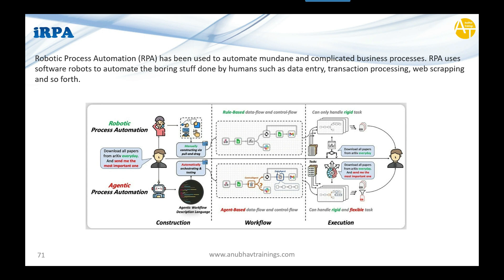Another example: get the list of employees promoted this year. For that, you open an Excel file, get email IDs of those employees, and you're doing clicks, copy-pasting data from one place to another. In the diagram, this girl is crying because this is a repetitive, boring task currently being done manually — clicking, dragging and dropping data, then passing it to a process.